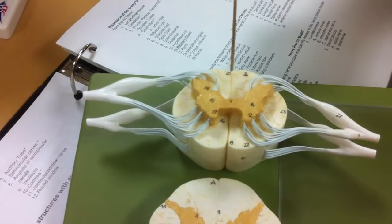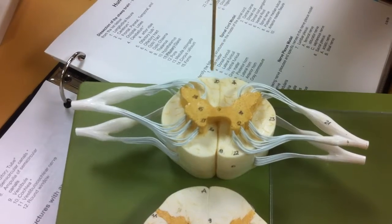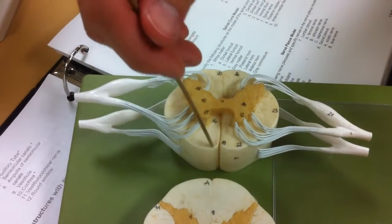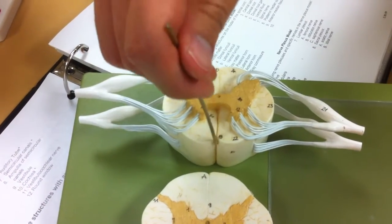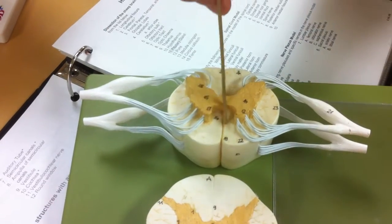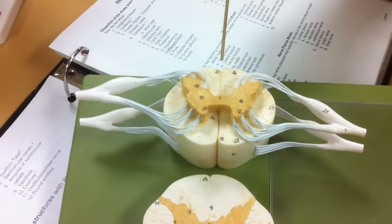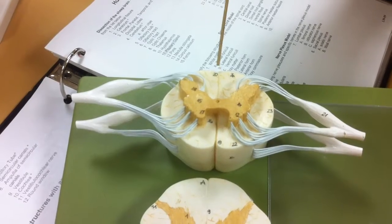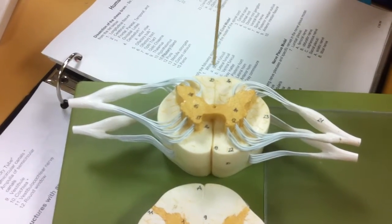Posterior median sulcus right here. And this is the anterior median fissure, not the sulcus. The reason why it's fissure is because the groove is a lot deeper than where the sulcus is, just barely indented.